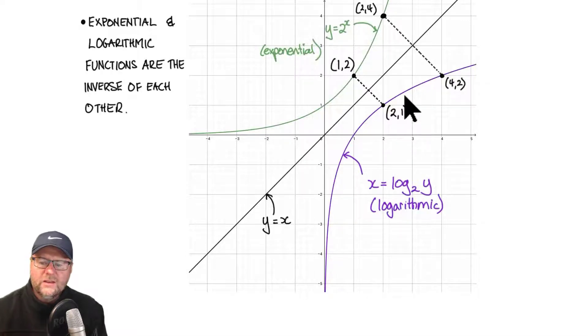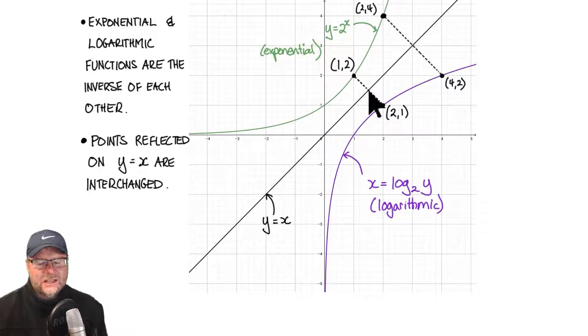Once again the same coordinates just swapped. My x and my y values swap. So there's another interesting connection between exponentials and logarithmic curves - the points reflected on y equals x are interchanged.